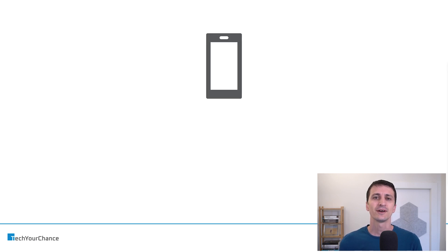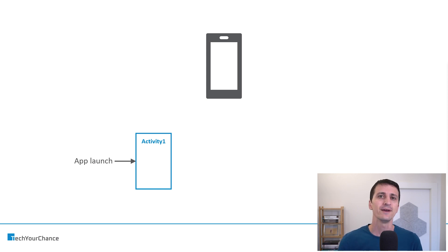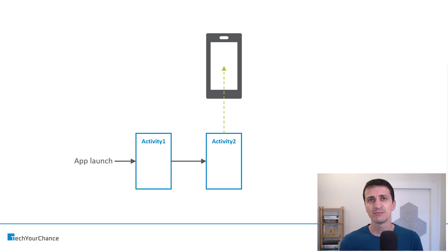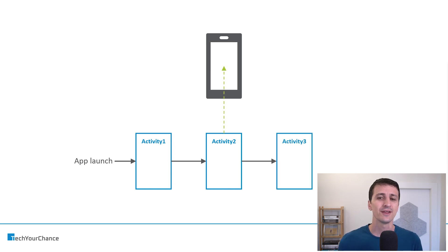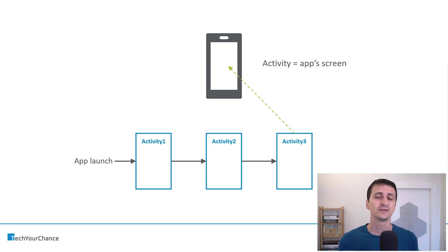We will start by describing how we thought about activities at the very beginning of the Android era. We had a phone, a device, and we wanted to show something on the user interface. We launched apps which resulted in launching a specific activity, which then showed some user interface on the screen. Through navigation inside the app, we started another activity, and basically we had one activity for each individual screen — so for a very long time, activity was seen as representing one app screen.